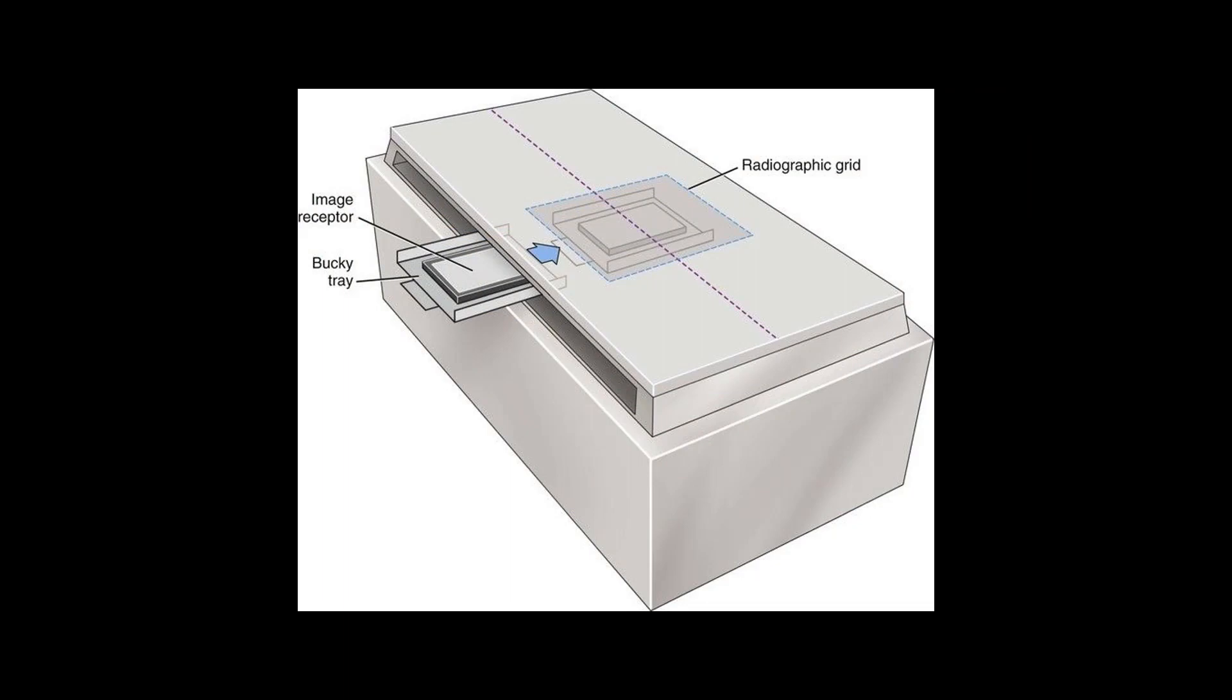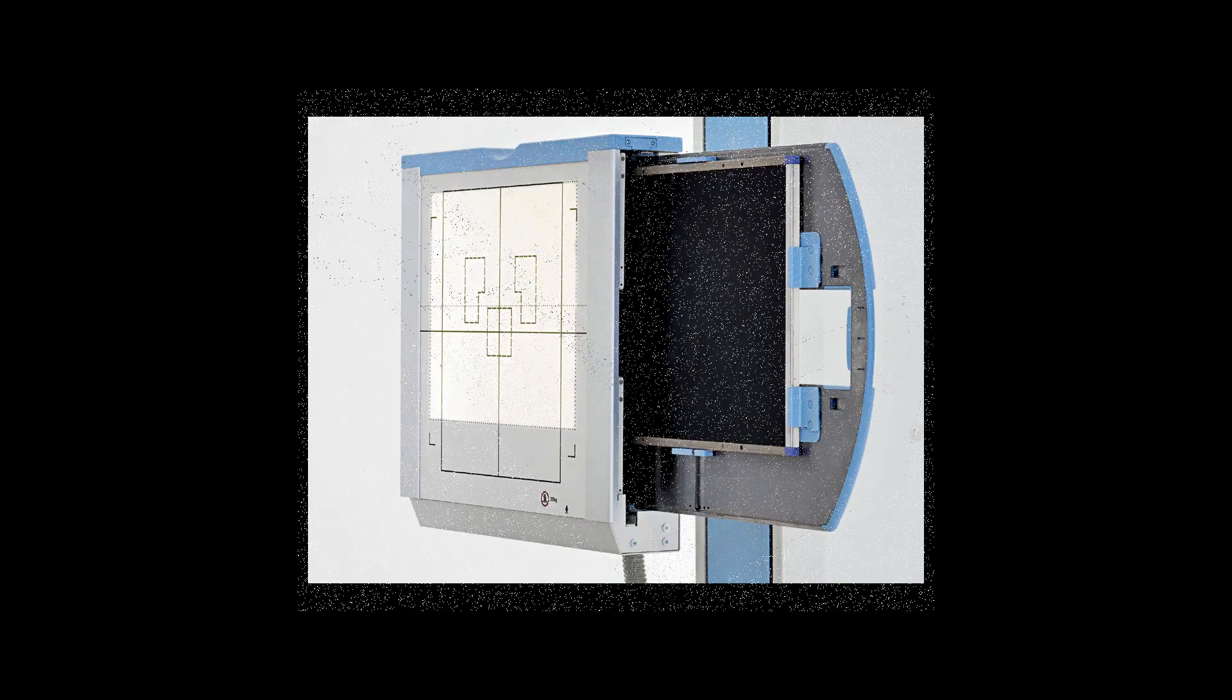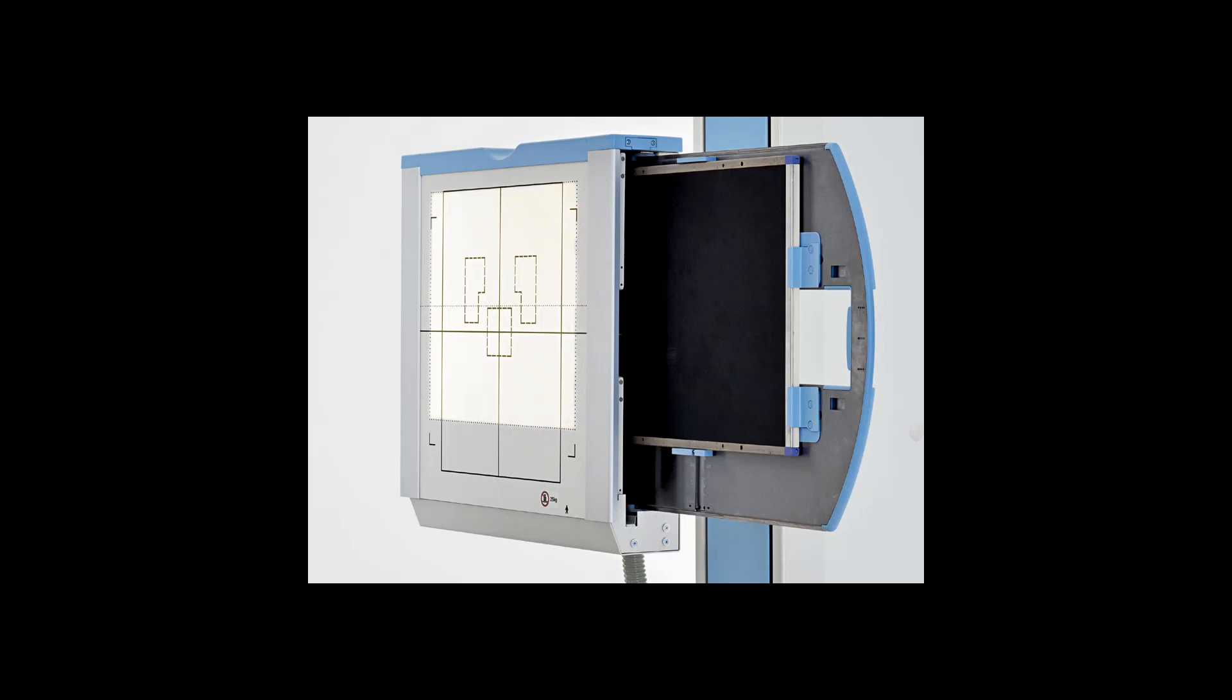The grids are placed between the patient and the film cassette. Meaning, if you have an x-ray table, the grid is placed directly under the table board. Or if you shoot x-rays upright, like chest x-rays, the grid is hidden behind the wall board.